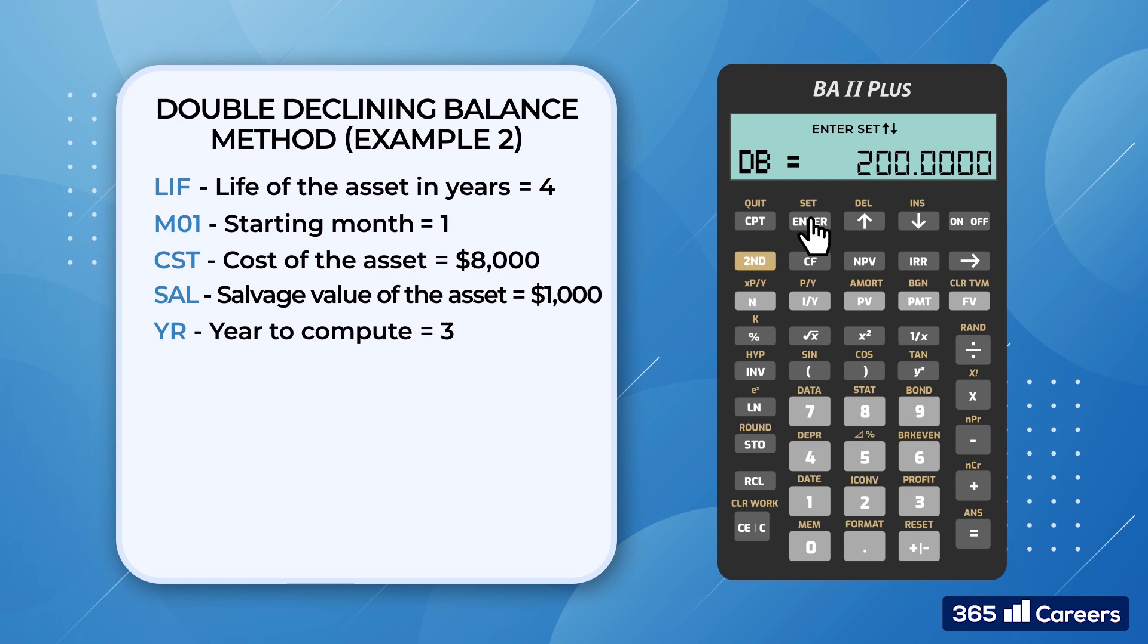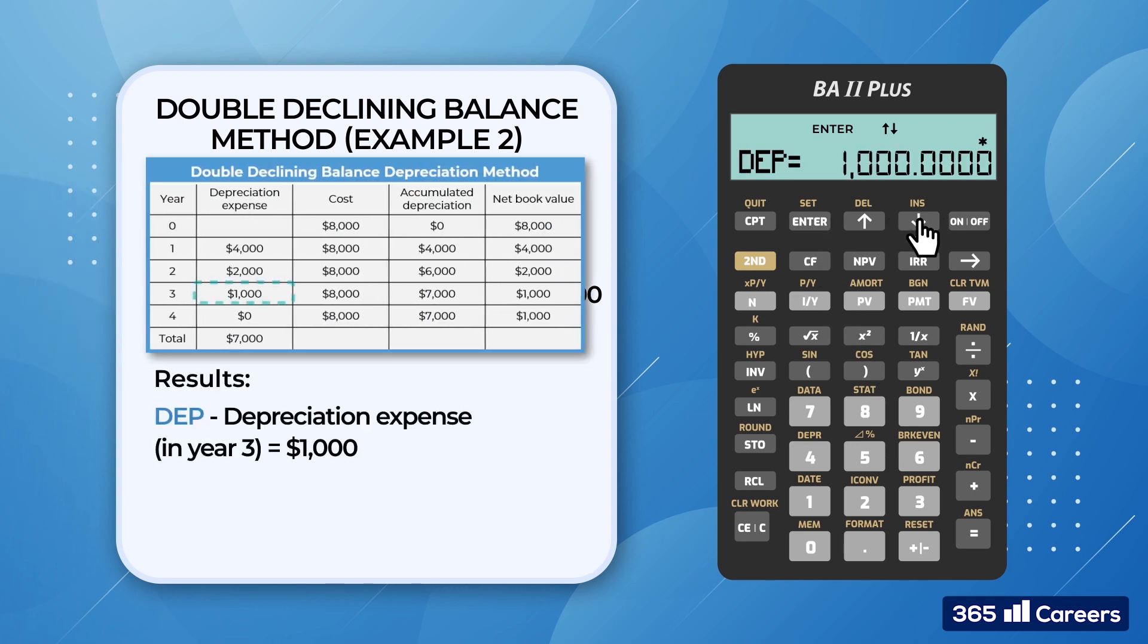When we scroll down, we see that the calculator still remembers the data that was entered previously. So we keep scrolling down until we reach the year at which we would like to calculate the depreciation expense and the net book value. Let's say our target is year 3. We enter 3 and then we examine the output. The depreciation expense equals $1,000. And so does the net book value, RBV.